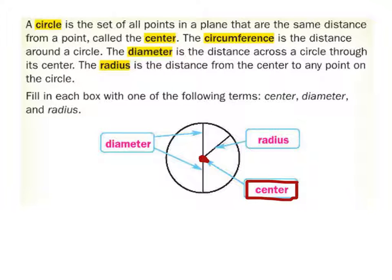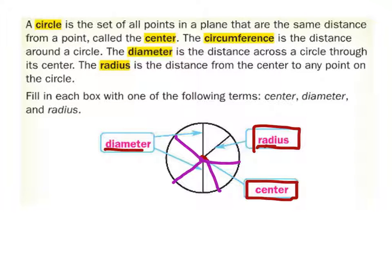Now, there are these other two parts of the circle that we need to know a lot about for this unit. First is radius, second is diameter. Really, the big one we're worried about is the radius. The radius is just any line that connects from any of the points on the circle into the center. Any of these are radii.